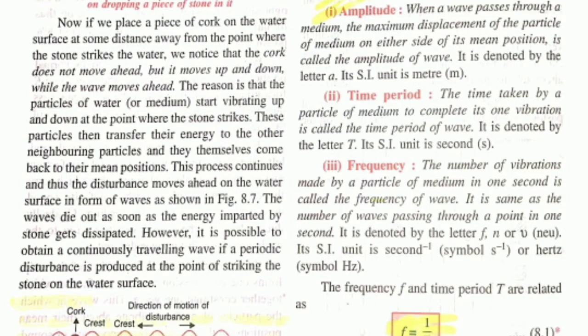The next terms are very important because they also appear in class 10. First is amplitude — amplitude refers to the maximum displacement. When a wave passes through a medium, the maximum displacement of the particle of the medium on either side of its mean position is called amplitude. Its SI unit is meter, denoted by small 'a'. Second is time period: the time taken to complete one vibration is called the time period. Its SI unit is second.